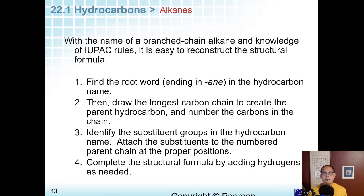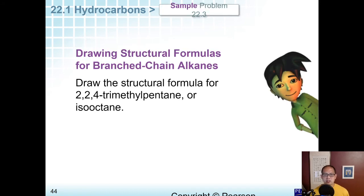If you get the name, reconstructing the structural formula is just doing the same thing backwards. Find the root word, ending in "-ane", then draw the longest carbon chain to create the parent, then identify the substituent groups, and then attach them, and then complete the structural formula by adding hydrogens as needed. Let's take a look at this one. Draw 2,2,4-trimethylpentane.